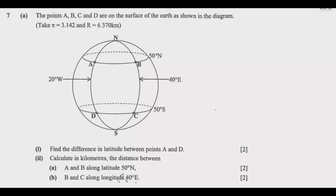7a: the points A, B, C and D are on the surface of the earth as shown in the diagram. Take pi to be 3.142 and radius of Earth to be 6370 kilometers. Roman numeral 1: find the difference in latitude between points A and D. Roman numeral 2: calculate in kilometers the distance between A and B along latitude 50 degrees north, and B and C along longitude 40 degrees east.